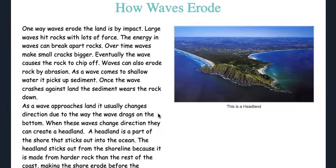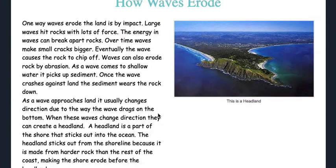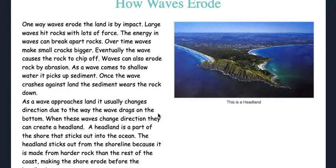How waves erode: one way waves erode the land is by impact. Large waves hit rocks with lots of force, and the energy in waves can break apart rocks. Over time, waves make small cracks bigger, and eventually the wave causes the rock to chip off.